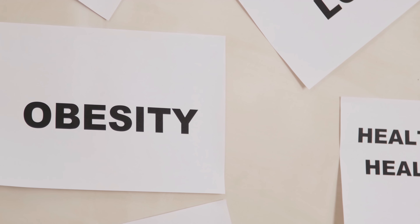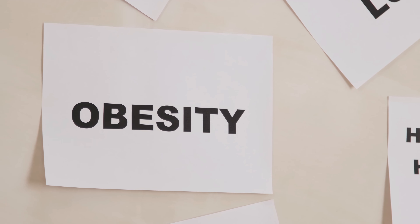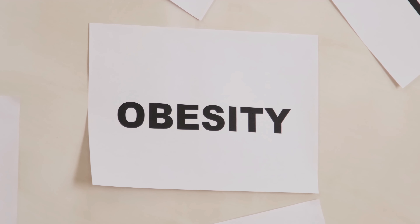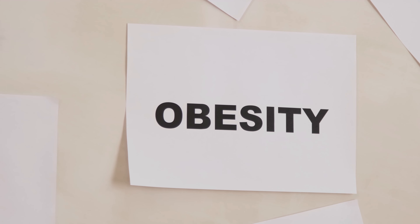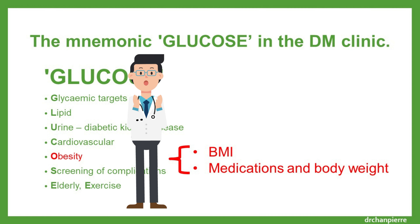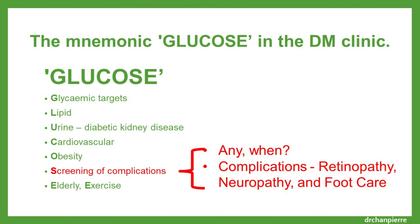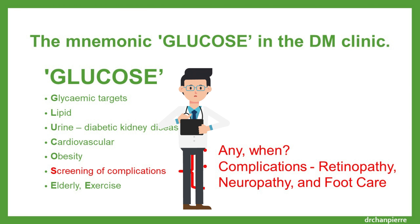O is for obesity. Body weight and height are used to calculate body mass index, BMI. The interaction between medications and body weight is also considered. As for screening, we check what screenings have been done and when the last screening occurred.